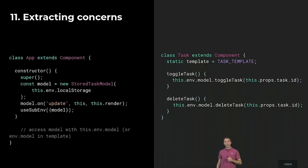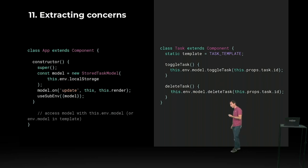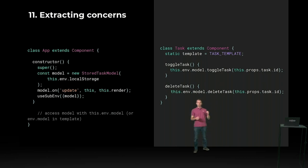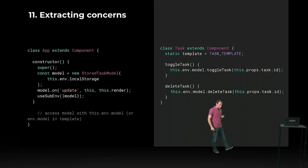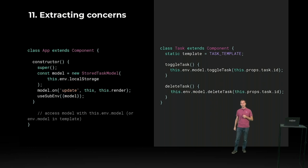The application component will instantiate a new storedTask model, take the localStorage from the environment, and at a critical point, listen to the update event. When this update event comes in — triggered by the model whenever it was updated — the app will call its render method, rendering the whole user interface. The flow goes like this: you have your application with an environment model; whenever you call a method on that model, it triggers an update, which is listened to by the root component, which renders the full application. The task component also calls toggle directly on the model in its event handlers.